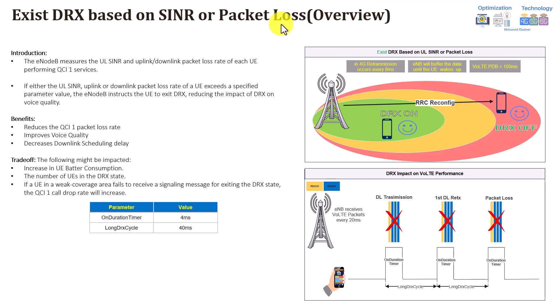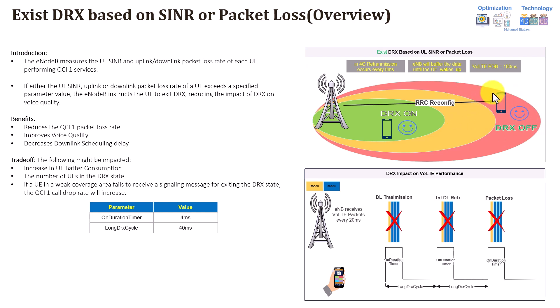The first feature we're going to cover today is called XDRX, based on SLR. This can have different naming across vendors, but in general it's a very simple feature with a simple mechanism where the eNodeB will instruct the UE to completely disable the DRX for a specific user in case the user's radio condition in the uplink falls below a certain threshold, based on SLR.